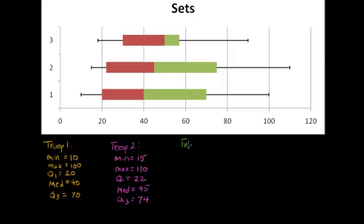And now let's analyze troop three. Our minimum, about 19. Again, you might come up with a slightly different value than I would on this, but we're doing the best we can here. Our maximum, looks like that would be about 90.